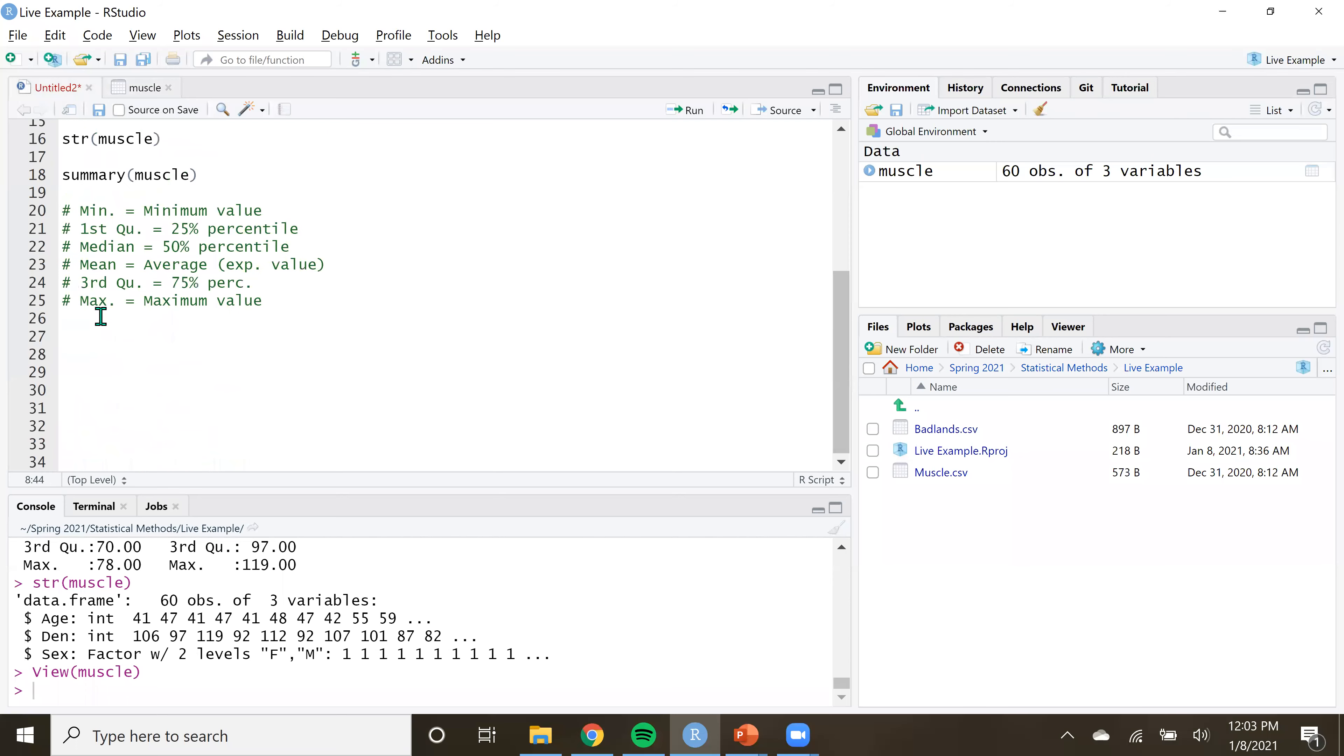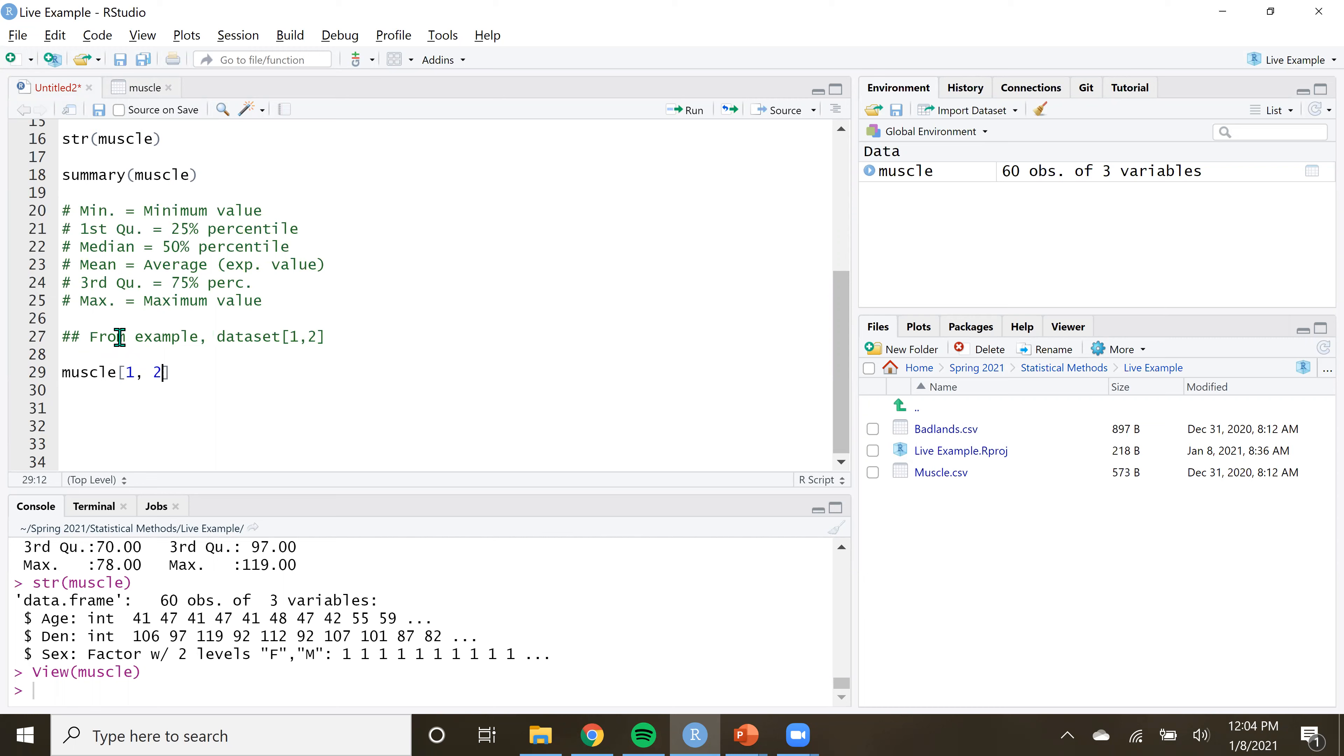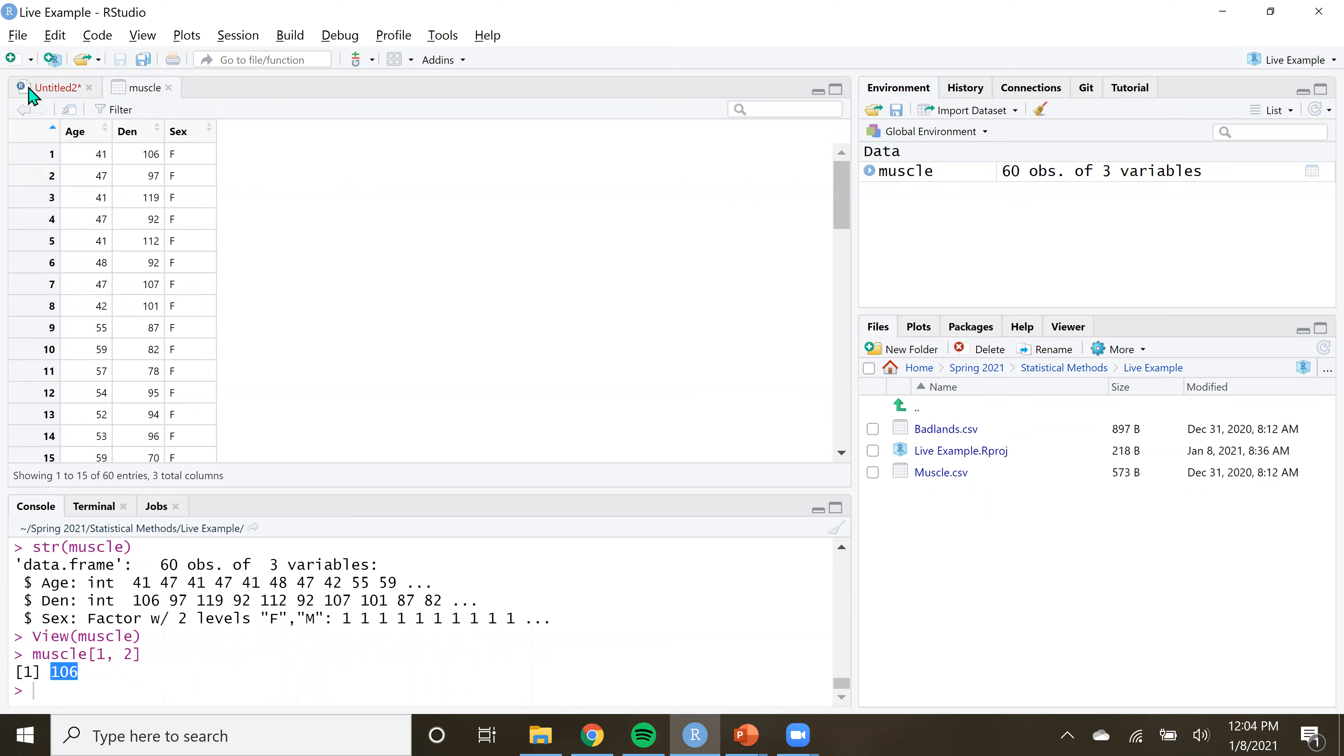Now, just for fun, if I were to come down here and say, from example, data set one, two, I'm going to come down here and use that same structure muscle and then data set and then square brackets and then one and then two, one comma two. What's going to happen? Booyah. I run that and it spits out this 106. It spits out the element in the first row and the second column, which is right there.